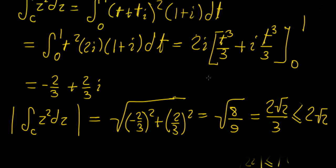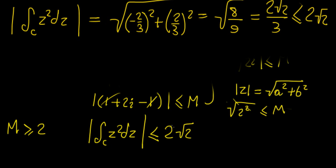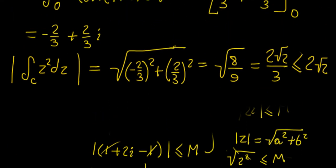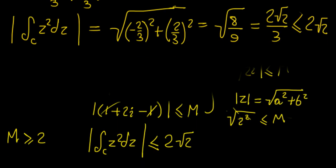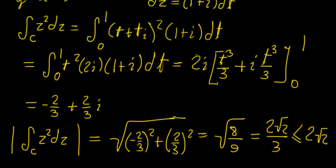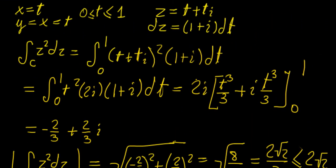The ML inequality is a good way to evaluate upper bounds of a complex integral. It's really useful in cases where we cannot actually calculate the exact value, but here we could, so we proved the inequality holds. In the next video, we'll continue defining contours and contour integration and introduce the Cauchy theorem, which will allow us to solve more complicated integrals in future videos.